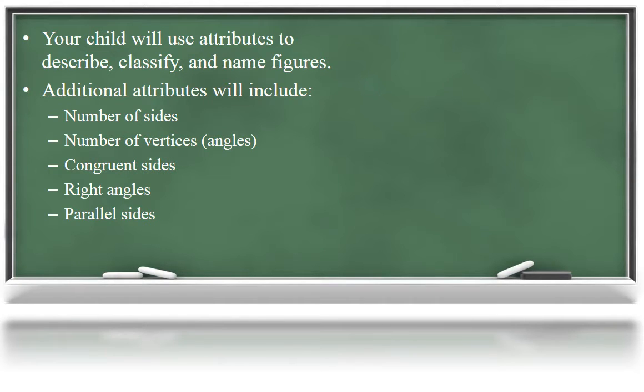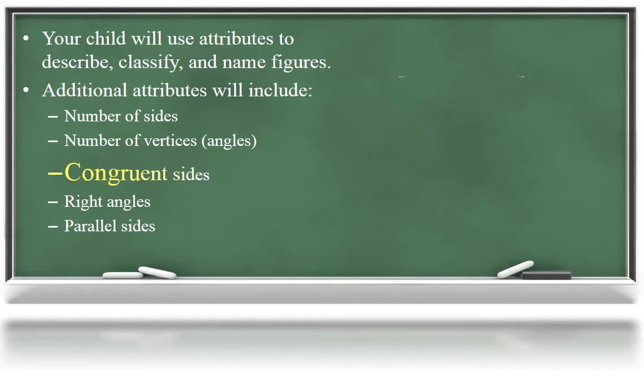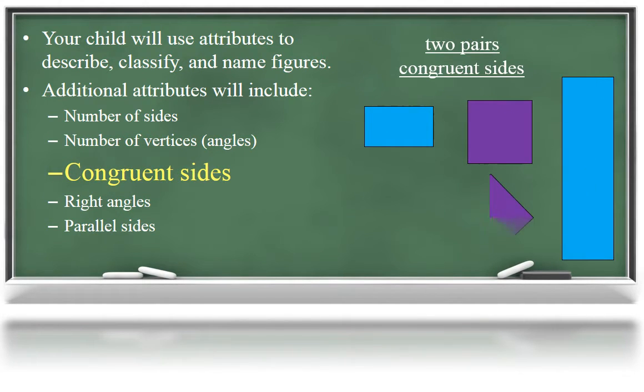Your child will work extensively with quadrilaterals. They will use attributes to sort, classify, and name quadrilaterals. All of the quadrilaterals on this slide have two pairs of congruent sides, or sides of equal length. What is special about the purple shapes? That's right, all four sides are congruent.